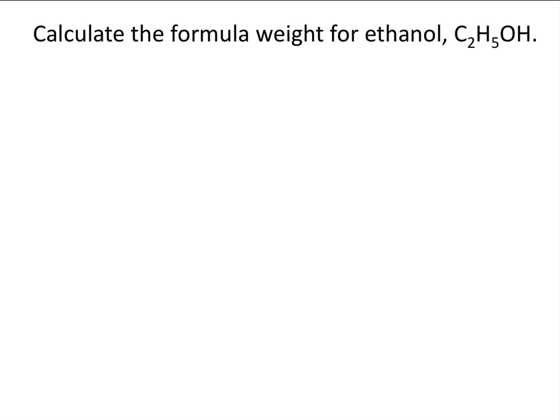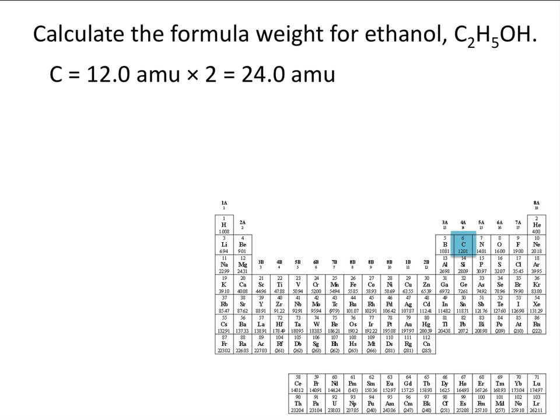What if things get a little more complicated? Let's now calculate the formula weight for ethanol, C2H5OH. Let's start by looking up the atomic weight of carbon, which is 12.0 AMU. Now we need to multiply that atomic weight by two because we have two carbon atoms in the formula for ethanol. Looking up the atomic weight for hydrogen, we see that it is 1.00 AMU, and then we multiply that by six because there are six hydrogens in the formula.